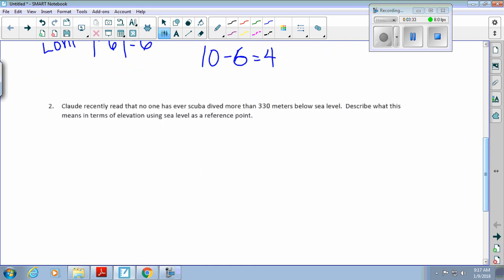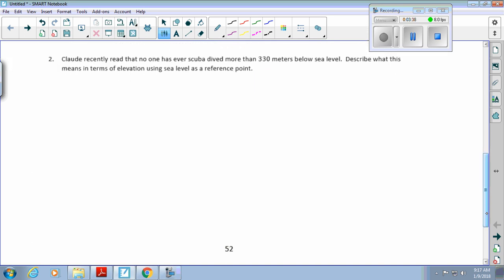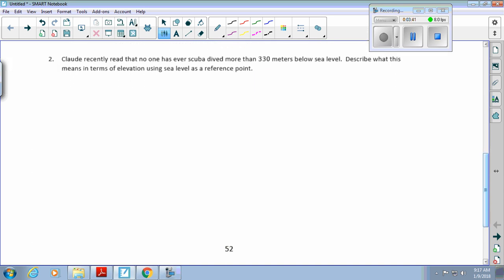Claude recently read that no one has ever scuba-dived more than 330 meters below sea level. Describe what this means in terms of elevation. The sea level is 0, and you go down 330 meters, so it is negative 330 meters. The only reason why you can't go past 330 meters down is because the pressure becomes so intense it could squish you.